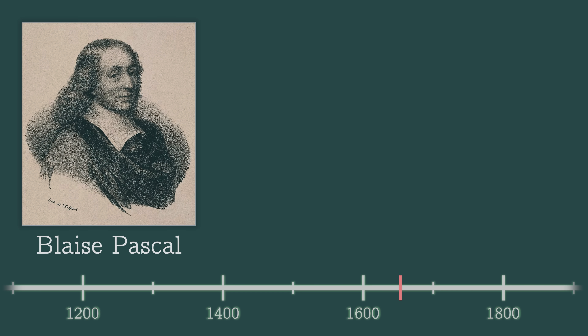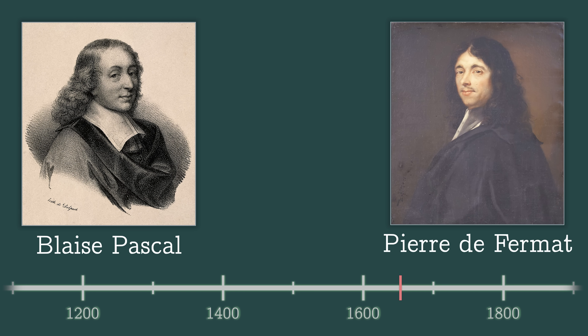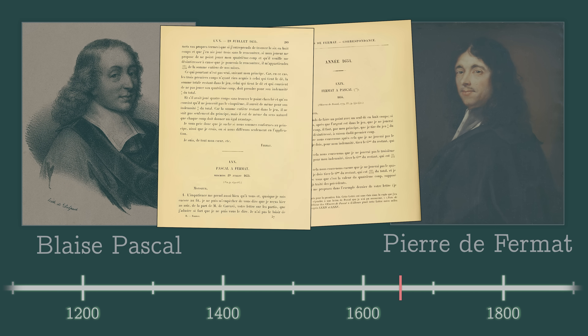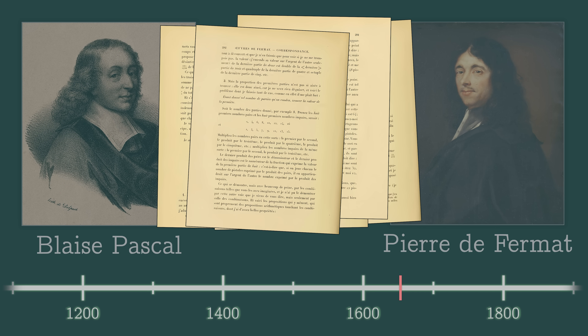In 1654, Blaise Pascal and Pierre de Fermat exchanged a series of letters about the problem of points. They had two different approaches, but both of them knew that the key is to look forward to the future, not backward to the past. They both argued that a fair solution is the average of future possible gains — and both computed what we now know as expected value.